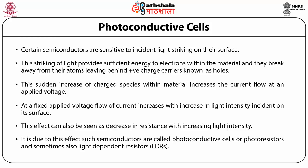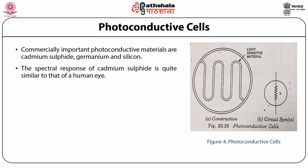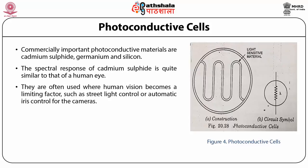Photoconductive cells are sometimes also called light dependent resistors, i.e., LDRs. Commercially important photoconductive materials are cadmium sulphide, germanium, and silicon. The spectral response of cadmium sulphide is quite similar to that of the human eye, and they are often used where human vision becomes a limiting factor, such as in street light control or automatic iris control for cameras.